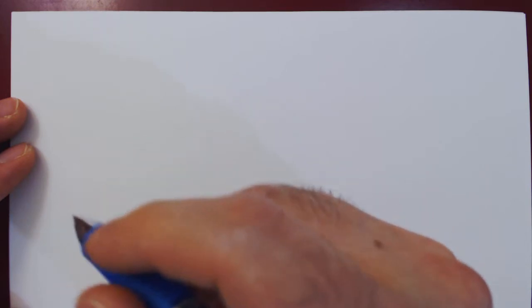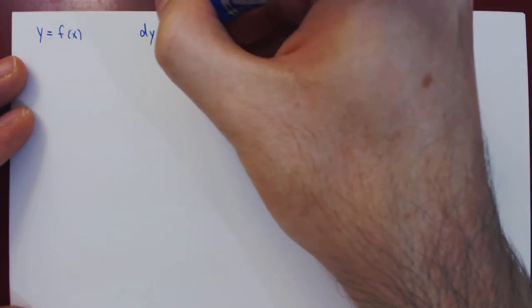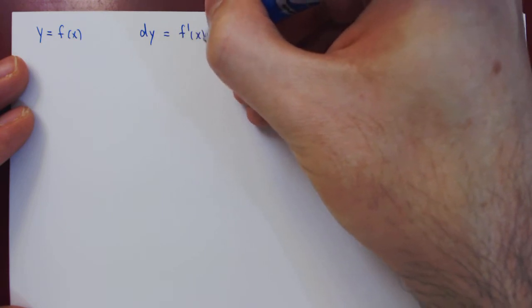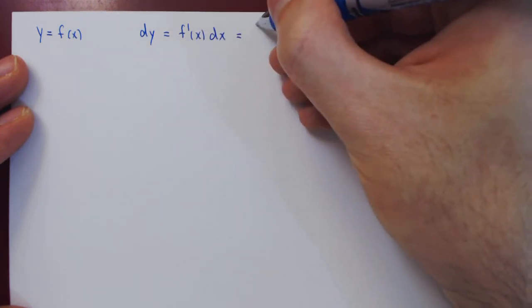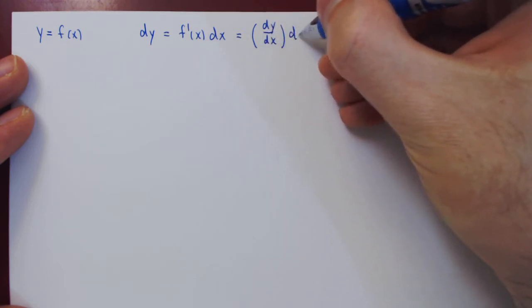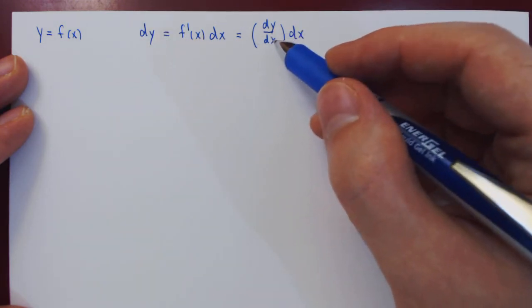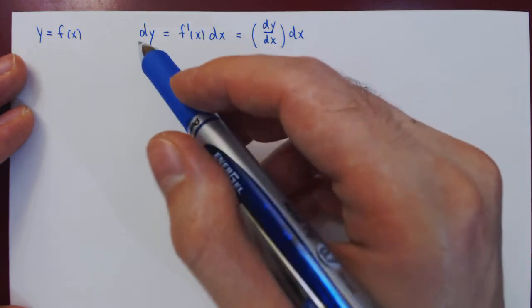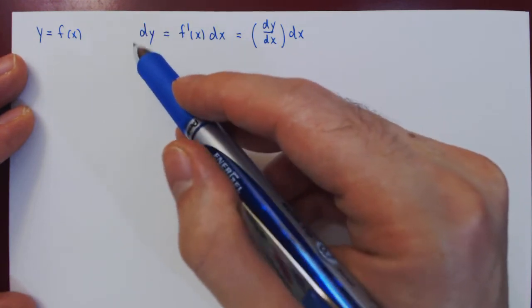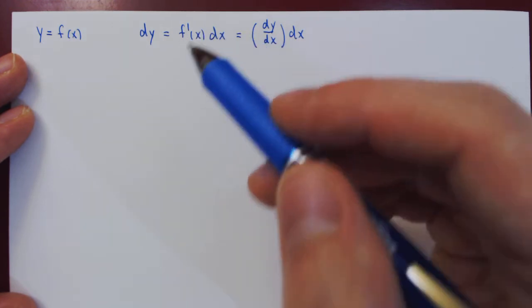In this video we will take a geometric look at the differential of a function. Say we have a function y equals f of x, then its differential dy is given by the derivative of the function at x times dx. We can also write the derivative as dy over dx times dx, and in this form we clearly get dy as dx over dx cancels. So we can have an infinitesimal change in y of the function by multiplying the derivative of the function by an infinitesimal change in x.